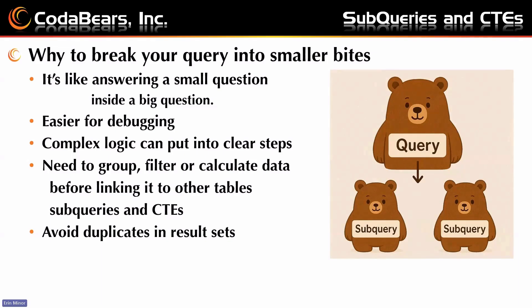If you need to group, filter, or calculate data before linking it to other tables or subqueries and CTEs, you can do that. For example, if you have a parent table like Employee and need to link it to things like what that employee did in labor detail, you might want to group it, filter it, and calculate it first so that there's just one line of data per employee. You can also avoid duplicates in your result sets that way.